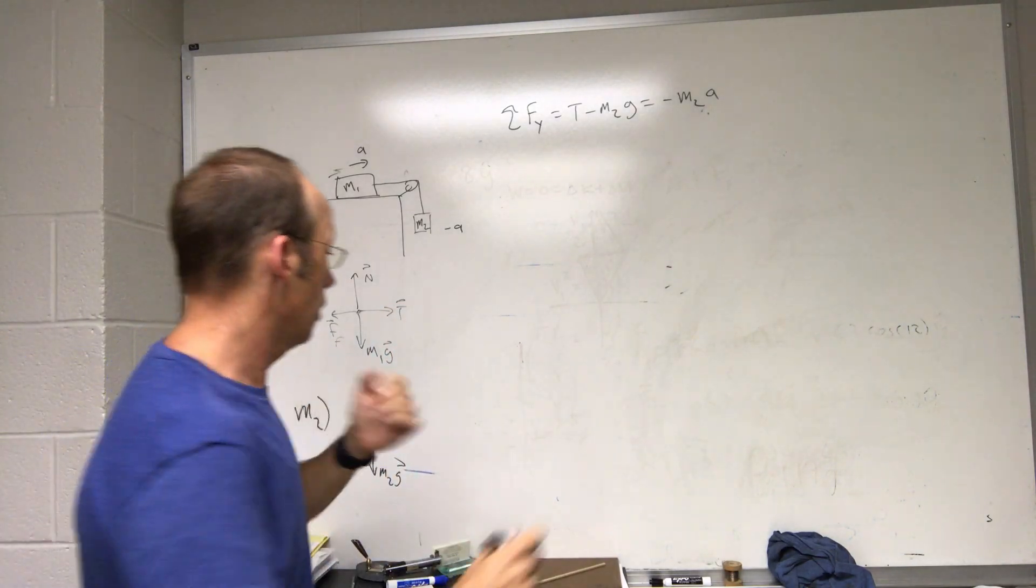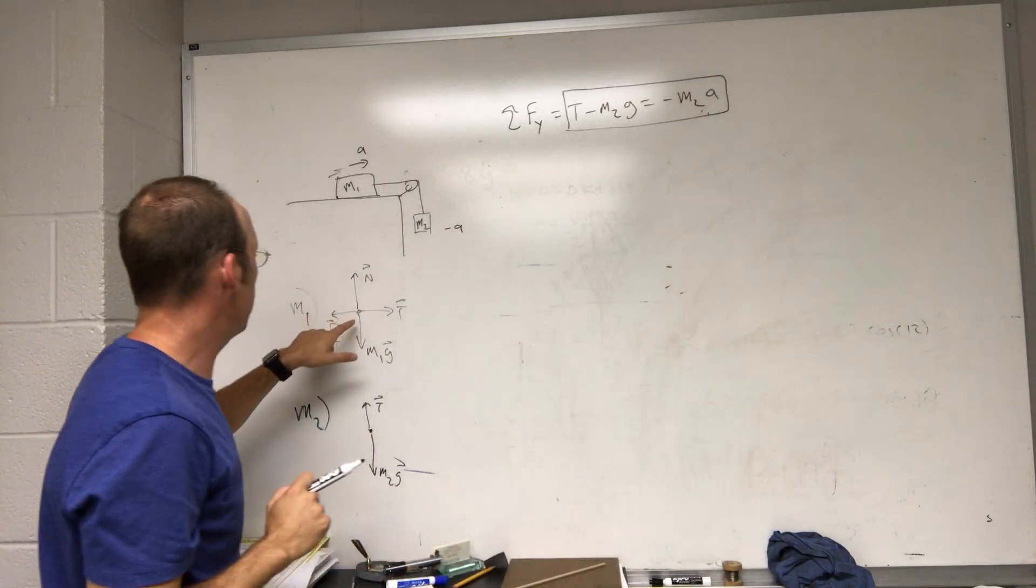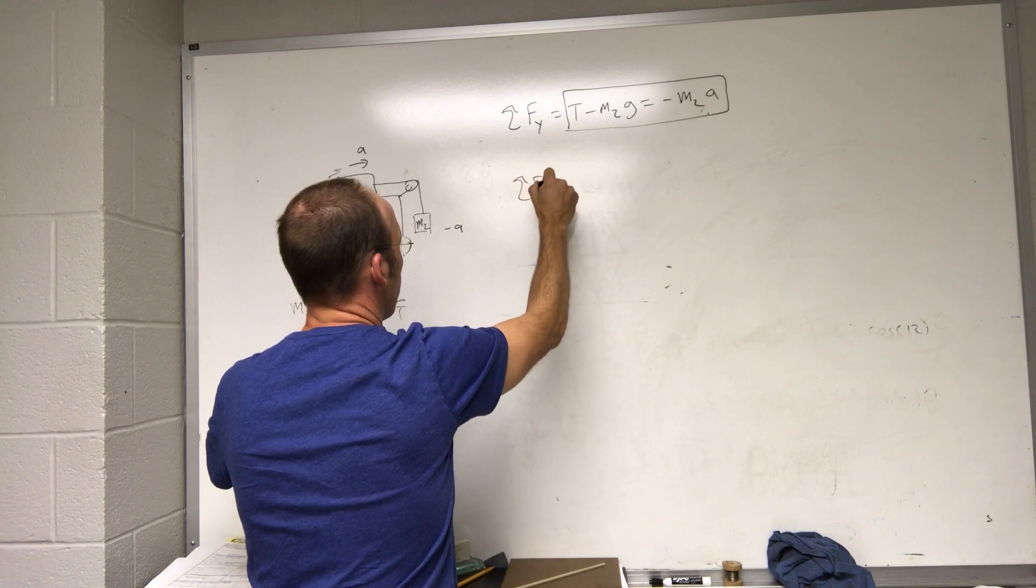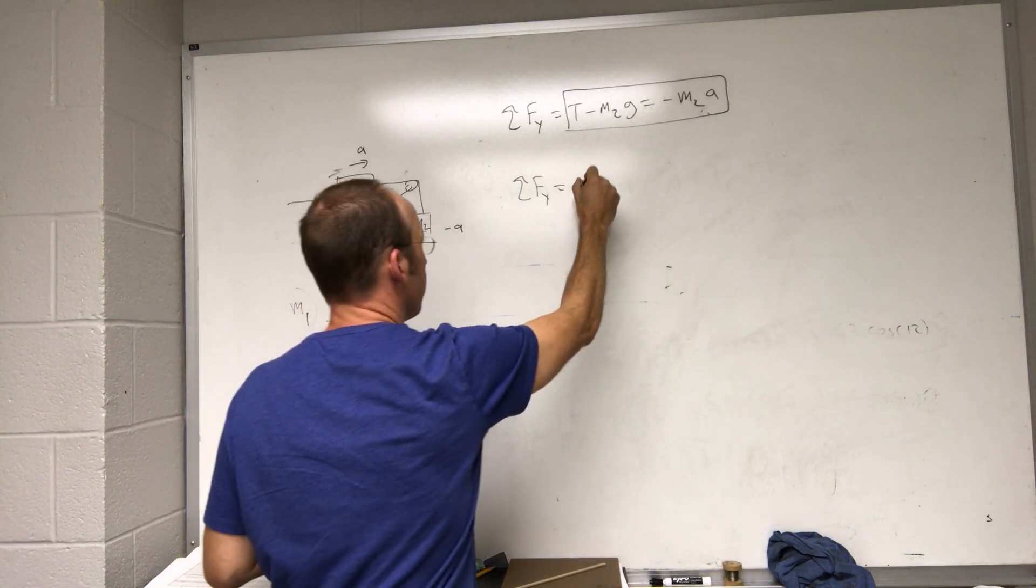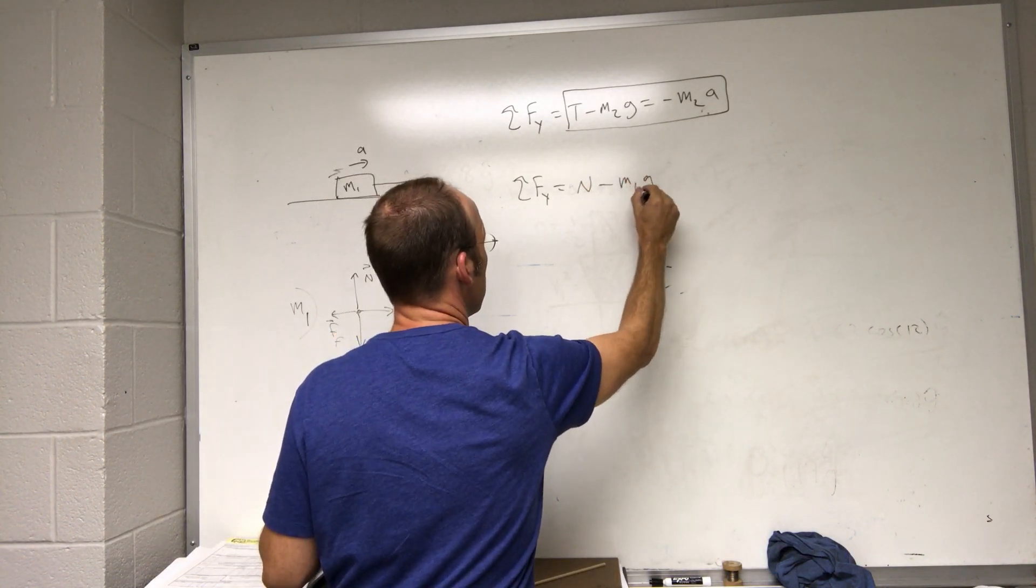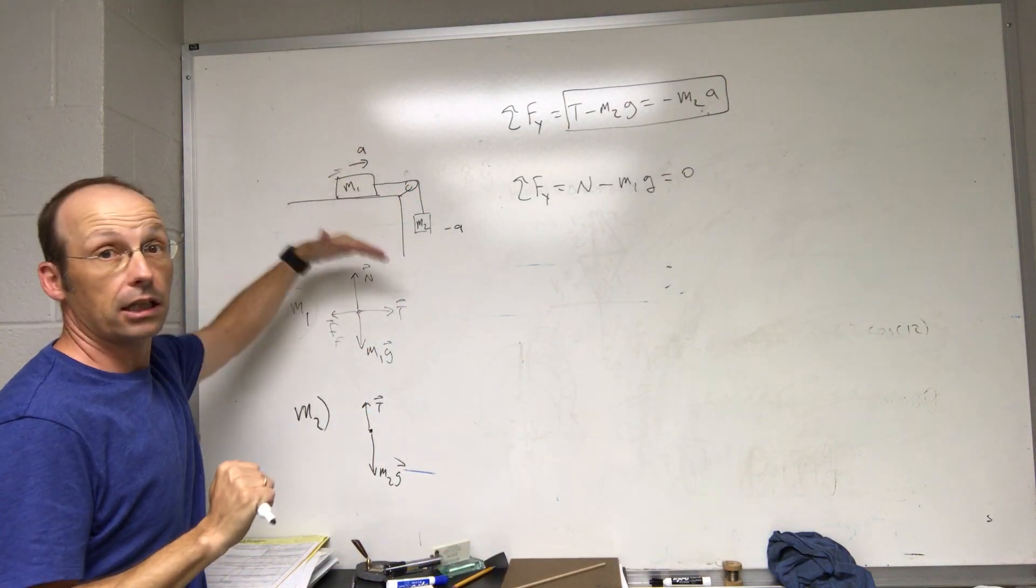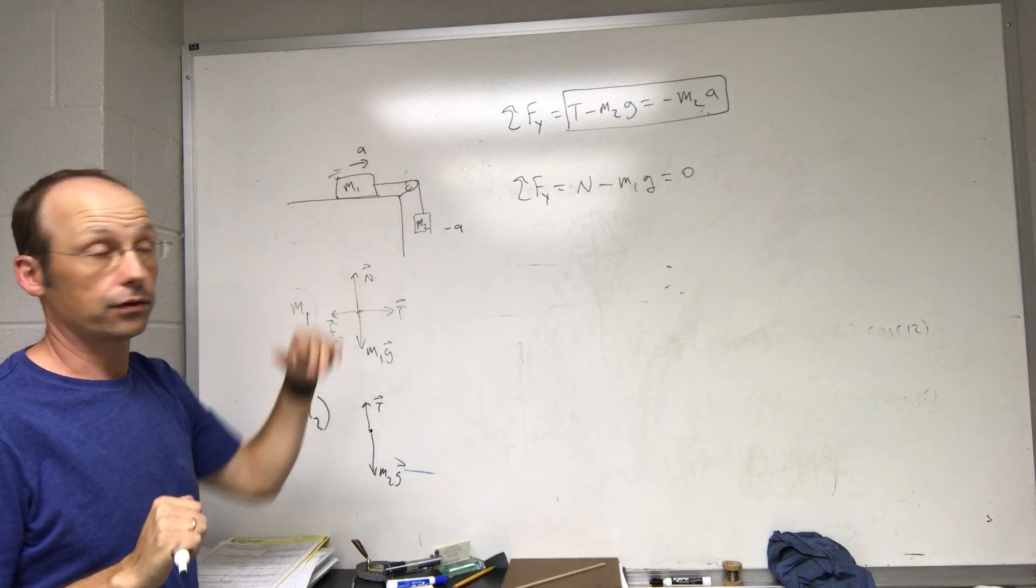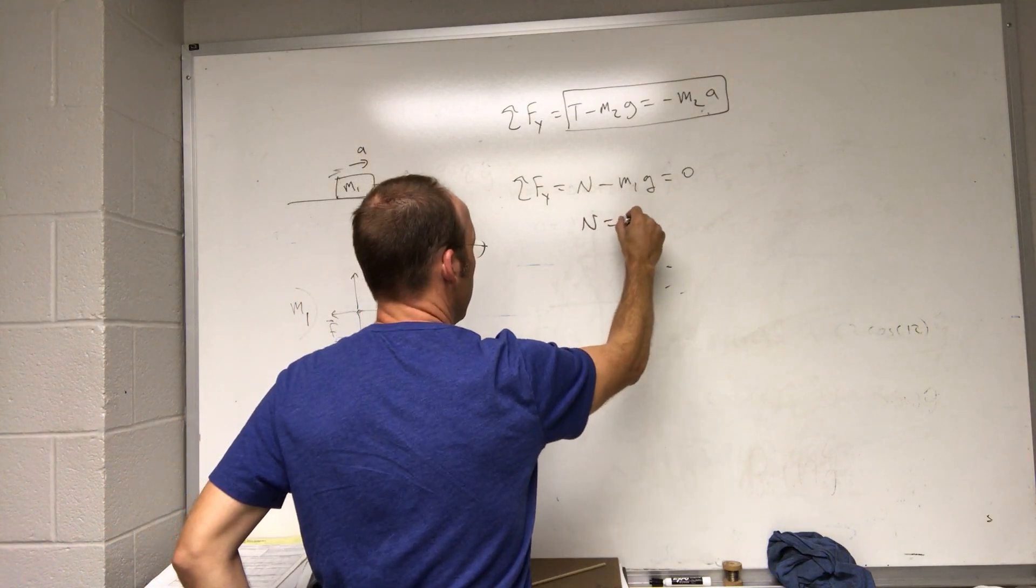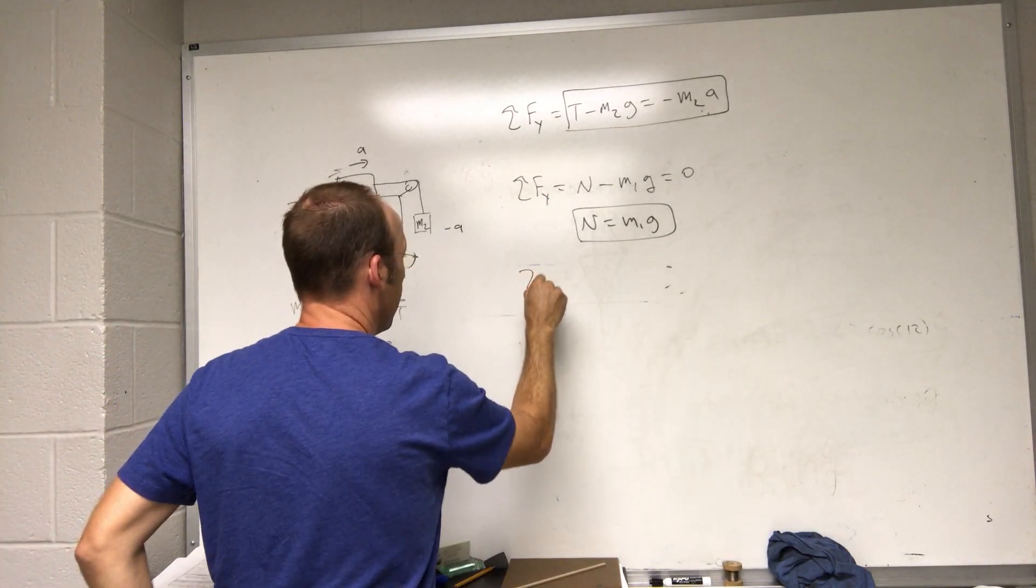Now I can write the y equation for mass one. Sum of the forces in the y direction, I only have two: I have the normal force minus m1 G. That's going to be equal to zero. That's zero because this mass does not accelerate up or down. It's going to stay on that flat surface. So right away I can solve this and I get N equals m1 G. That's important.